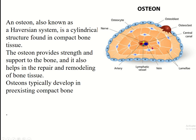A single Haversian system contains a Haversian canal which contains a neurovascular bundle. It is surrounded by lamellae, and within the lamellae there is a depressed area which lodges osteocytes. Some canaliculi are present which contain the processes of the osteocytes. This single unit of the Haversian system is known as the osteone, and it typically develops in pre-existing compact bone.